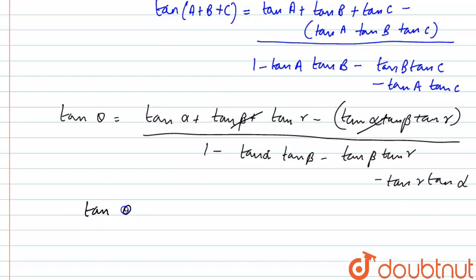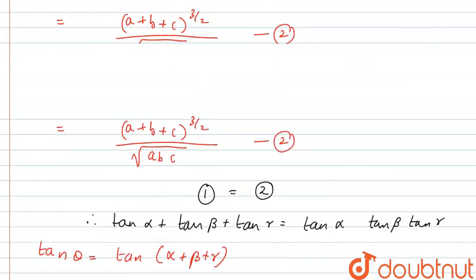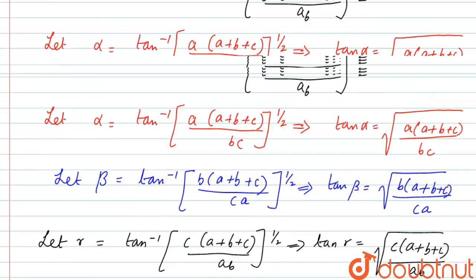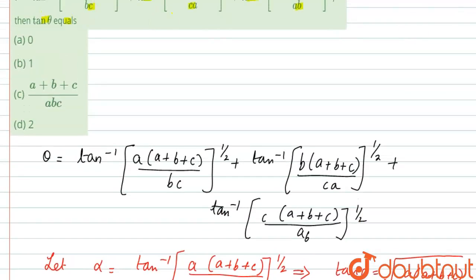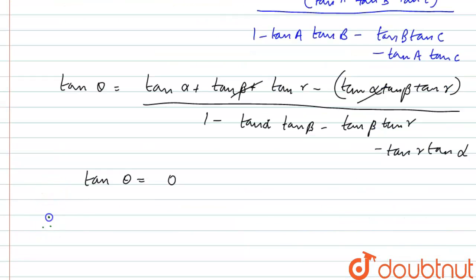Thus, tan theta equals 0. Looking at the options, the correct answer is option A: 0. Therefore, the answer is option A, 0. Thank you.